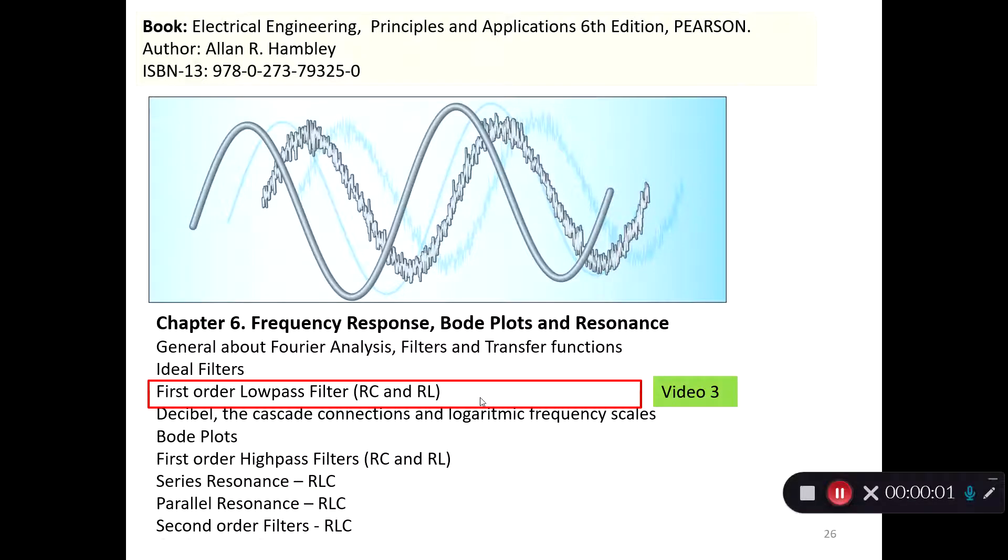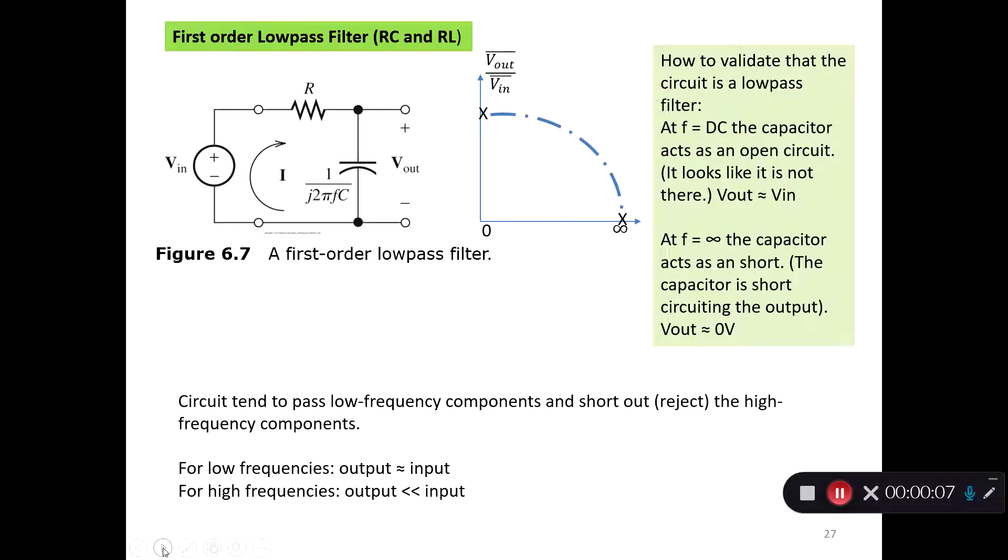Welcome to this video number three on first-order low-pass filter. The first-order low-pass filter we see here is made up of a resistor and a capacitor, and we use the model of a two-port network with the input and the output.